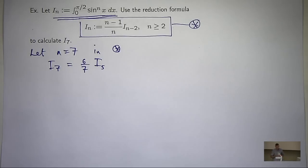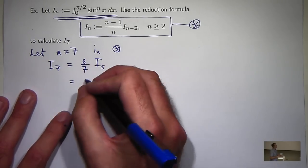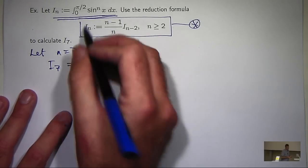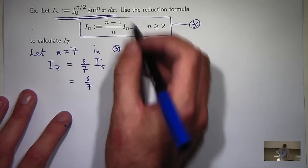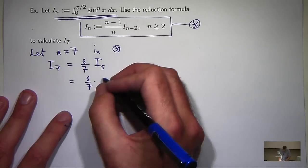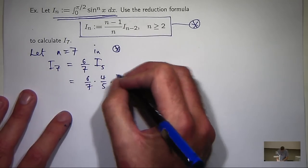So again, I sub 3, we can break that down a little bit. So it's going to be 2 on 3 times I sub 1.